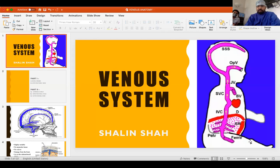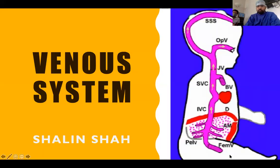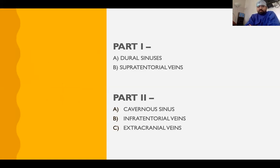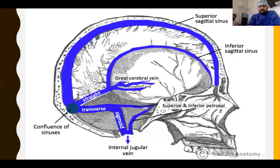Today I will share my screen and discuss venous anatomy, divided into two parts. Part one covers dural sinuses and supratentorial veins. In part two, on Saturday at the same time, I will discuss cavernous sinus, infratentorial veins, and extracranial veins. This is an overview of what we are going to discuss today.